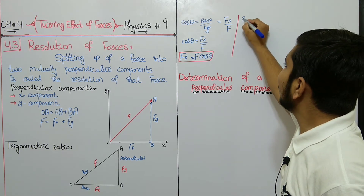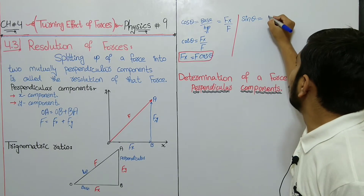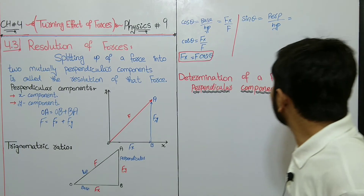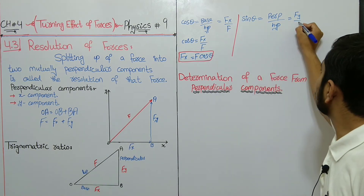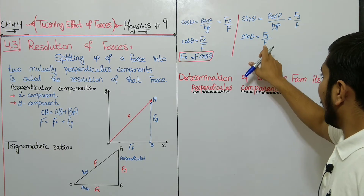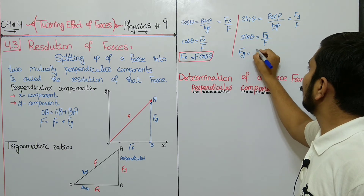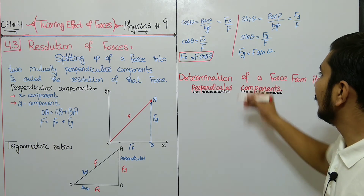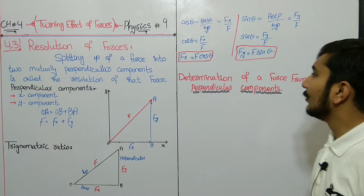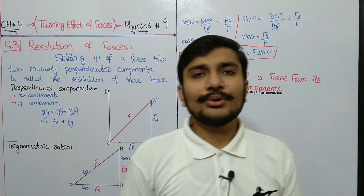Now we will find Fy using sin θ. Sin θ is equal to perpendicular over hypotenuse. Perpendicular over hypotenuse is equal to Fy over F. So if we find Fy, it is equal to F sin θ. This is the force on the x-axis and the force on the y-axis. I hope that you understand it.